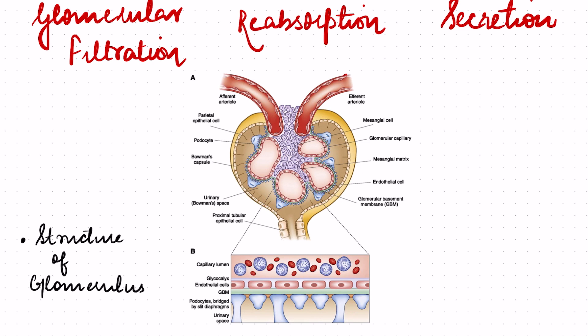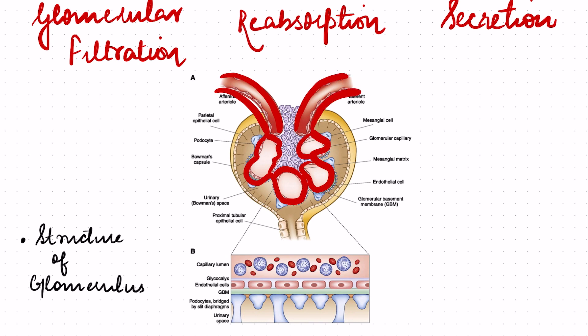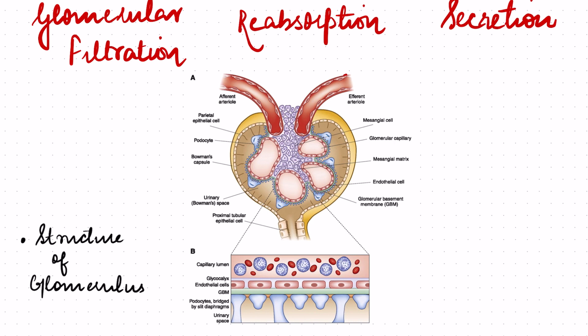A glomerulus is nothing but a tuft of capillaries. This tuft of capillaries starts with the afferent arteriole and ends with the efferent arteriole. What is so special about these capillaries is that they form the filtration membrane for the blood through which the blood gets filtered. No other organ in the body has this structure of capillaries that kidneys have, because ultimately only kidneys have to filter the blood.